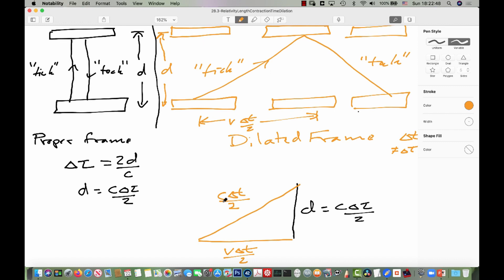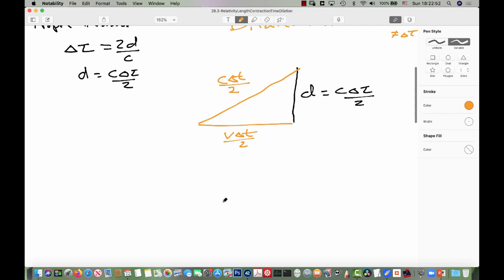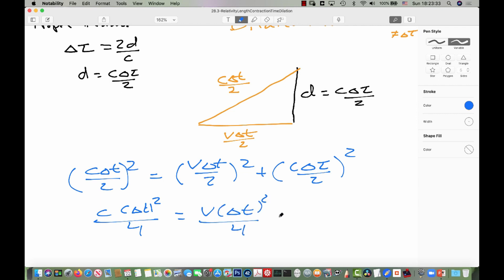So, this is where the failure had promised the Pythagorean theorem, and here it comes. So, C delta t over 2 is our hypotenuse. That has to be equal to the sum of the squares of the two legs. So, that will be v delta t over 2 squared plus C delta tau over 2 squared.